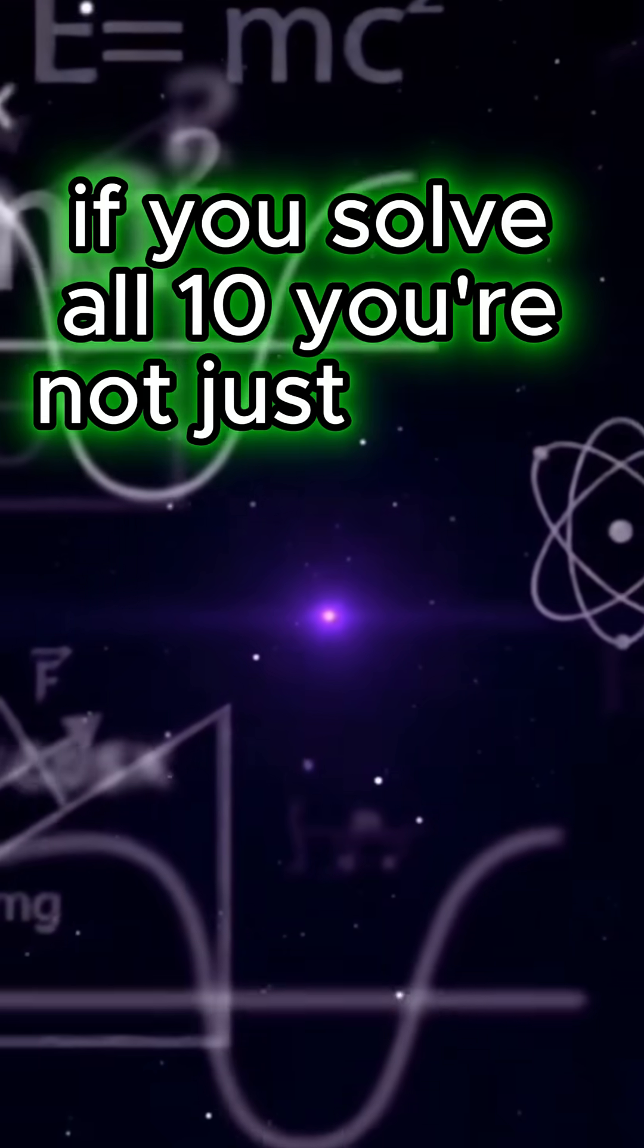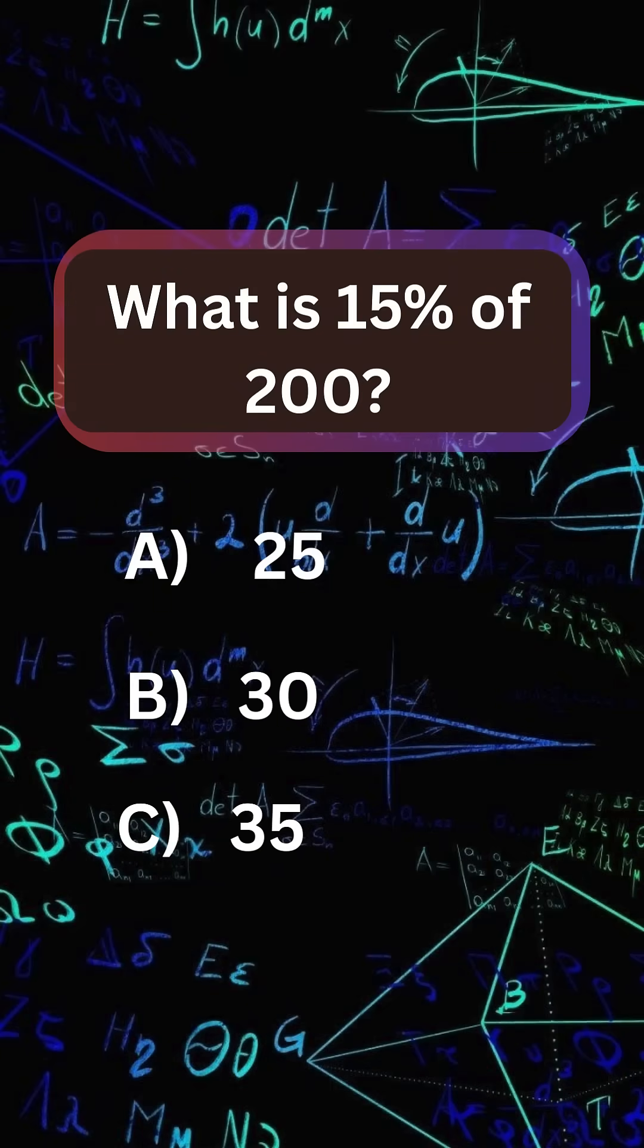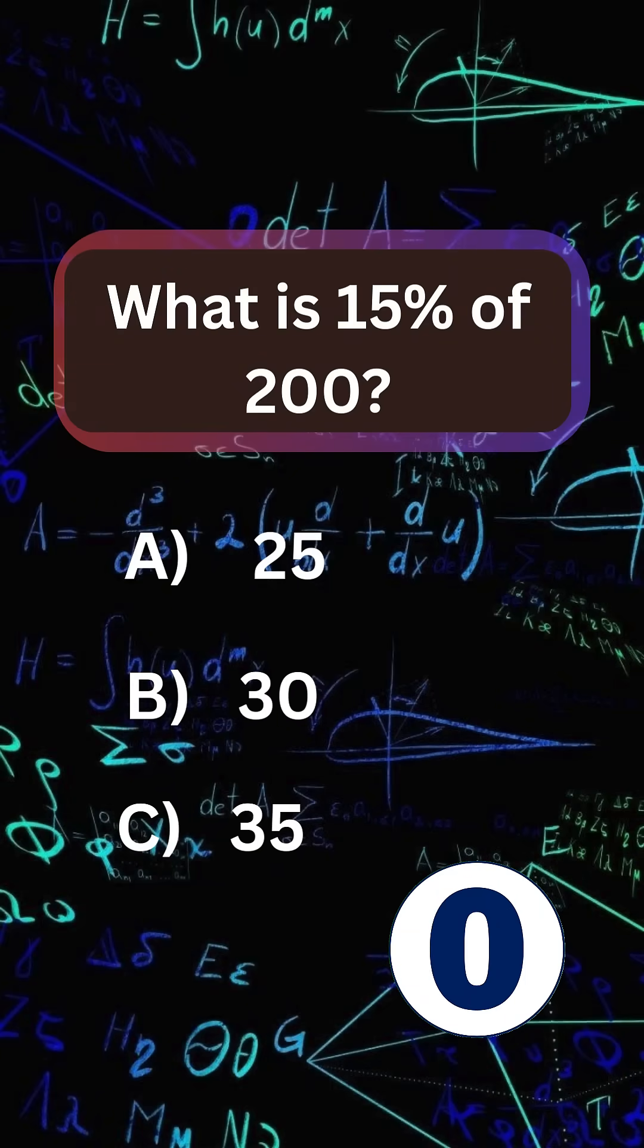If you solve all 10, you're not just smart. You're a math machine. What is 15% of 200? Answer: 30.